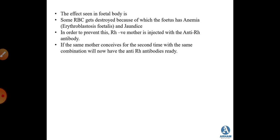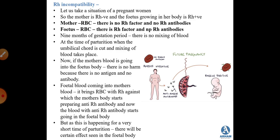The two main effects on the fetus are: first, some RBCs get destroyed, causing fetal anemia known as erythroblastosis fetalis; second, the fetus may suffer from jaundice. To prevent this, an Rh negative mother is injected with anti-Rh antibodies throughout pregnancy. If the same mother conceives again with the same combination (Rh negative mother, Rh positive fetus), there are no effects because the mother already has Rh antibodies.